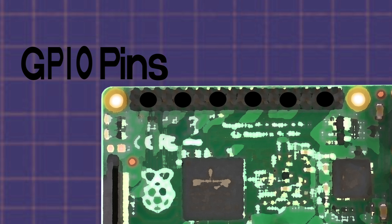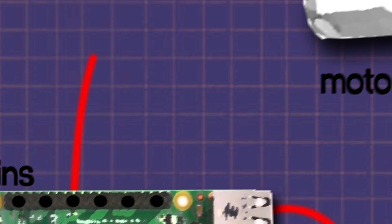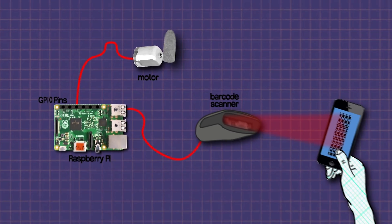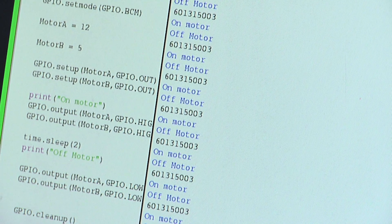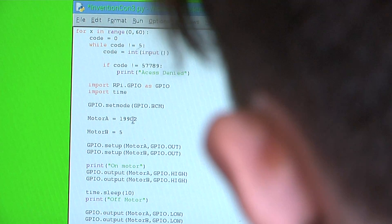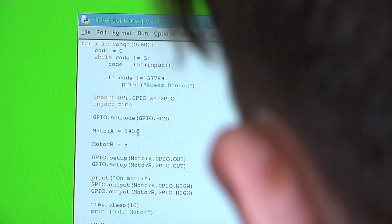Then the GPIO pins send a signal to the servo motor telling it to be locked or unlocked. We ended up with a totally different string of code than we thought of before and it turned out to work super well.